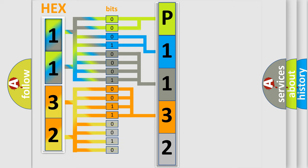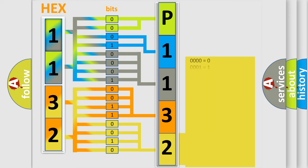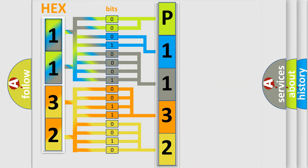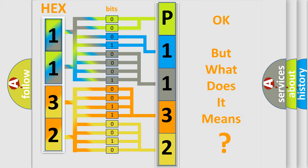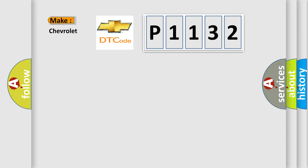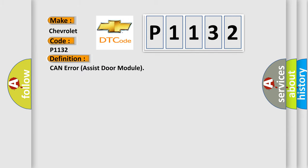A single byte conceals 256 possible combinations. We now know in what way the diagnostic tool translates the received information into a more comprehensible format. The number itself does not make sense if we cannot assign information about what it actually expresses. So, what does the diagnostic trouble code P1132 interpret specifically for Chevrolet car manufacturers? The basic definition is: CAN error assist door module.